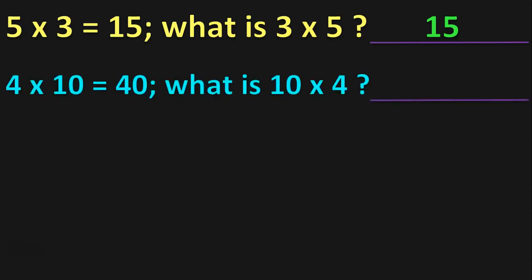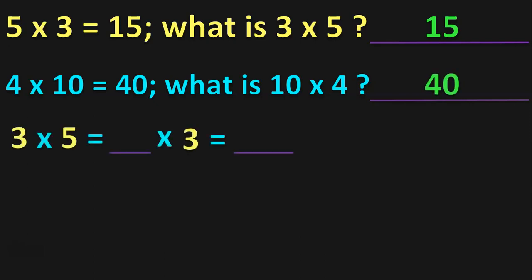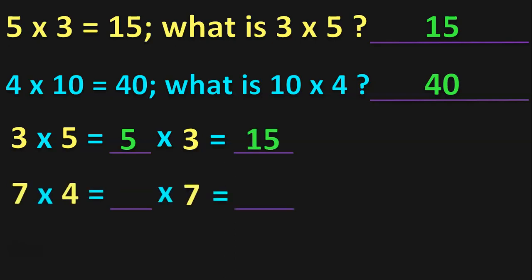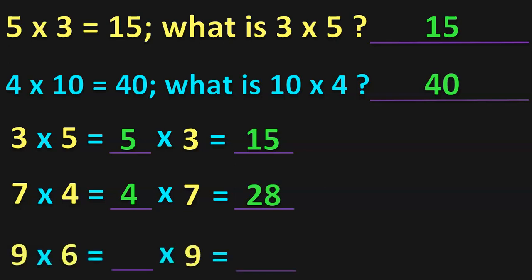4 into 10 is 40. 10 into 4 is also 40. 3 into 5 is equal to dash into 3 is equal to dash — the answer is 5 into 3, which equals 15. 7 into 4 is equal to 4 into 7, and the product is 28. 9 into 6 is equal to 6 into 9, and the answer is 54.